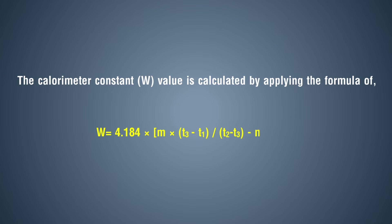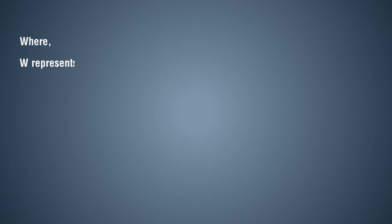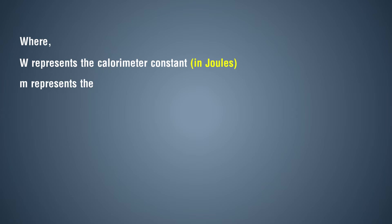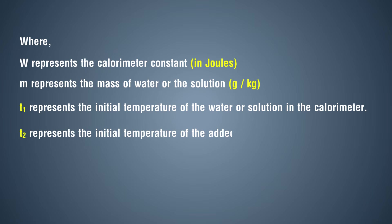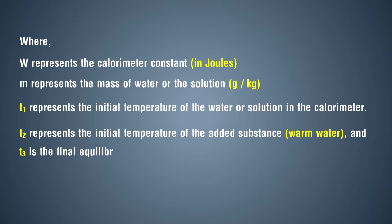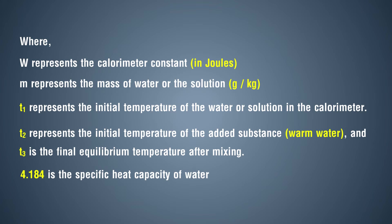Where W represents the calorimeter constant in joules, m represents the mass of water or solution in grams or kilograms, T1 represents the initial temperature of the water in the calorimeter, T2 represents the initial temperature of the added warm water, T3 is the final equilibrium temperature after mixing, and 4.184 is the specific heat capacity of water in joules per gram degree Celsius.